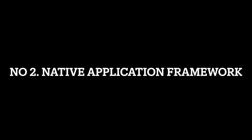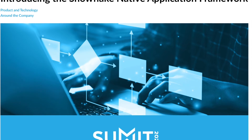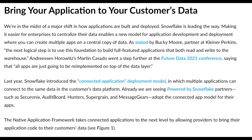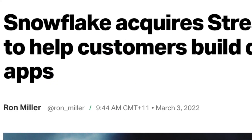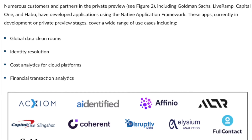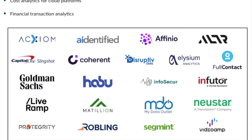The second feature is the Native Application Framework, also in private preview, aimed at commercial developers. It allows developers to deploy applications to the Snowflake marketplace, and customers can securely install and run them directly in their own Snowflake instances without physically moving or copying data across the network. Developers can build applications using stored procedures, user-defined functions, and user-defined table functions, and it can also incorporate Streamlit, a company Snowflake very recently acquired. The purpose is to ease the pathway of getting applications into customers' hands and reducing time to market.